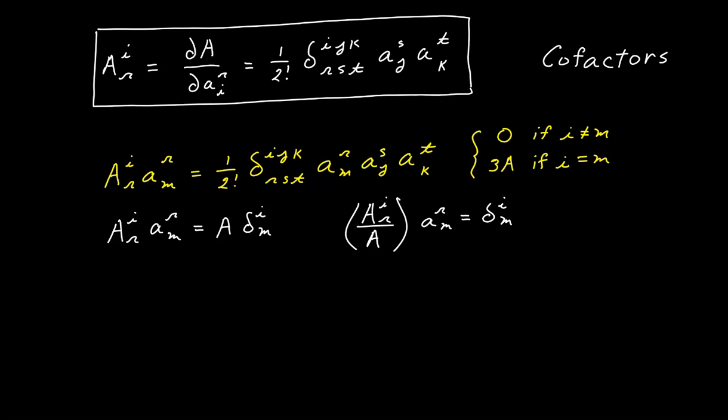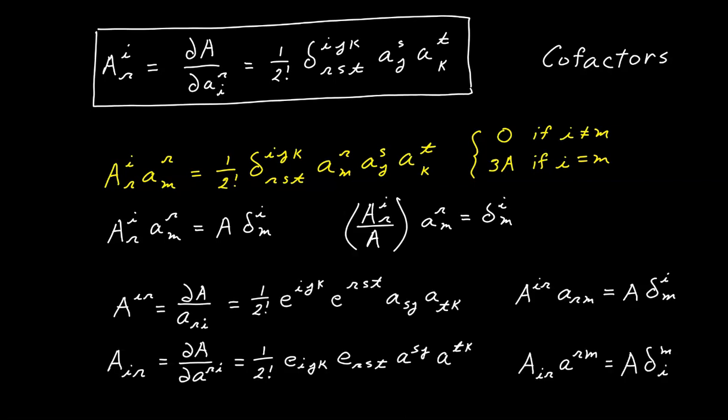Obviously all this analysis is related to a system with one upper index and one lower index. But everything applies equally well to systems with two upper indexes or two lower indexes. Rather than repeat that analysis for those cases, I'll just give you the final results, and I'll leave it to you as an exercise to demonstrate that these results are correct.